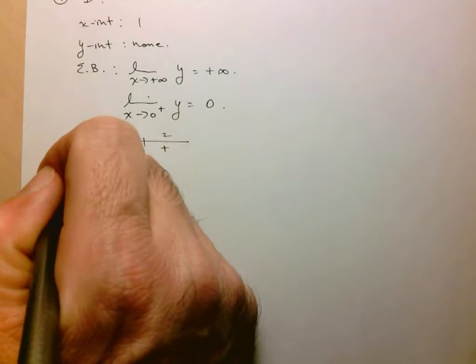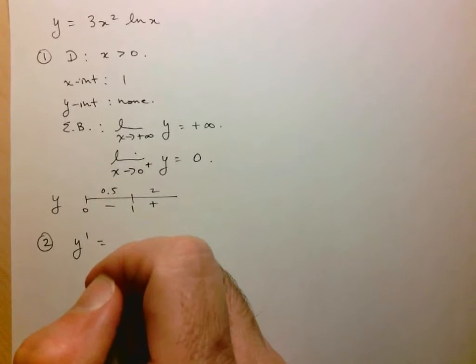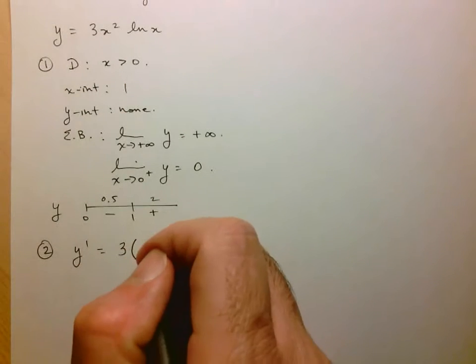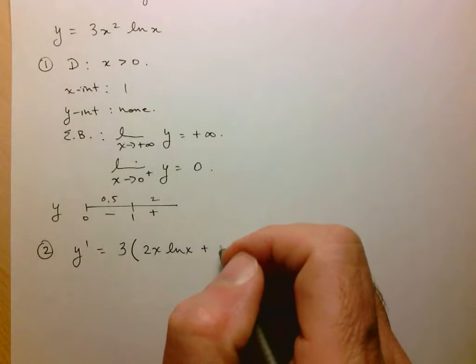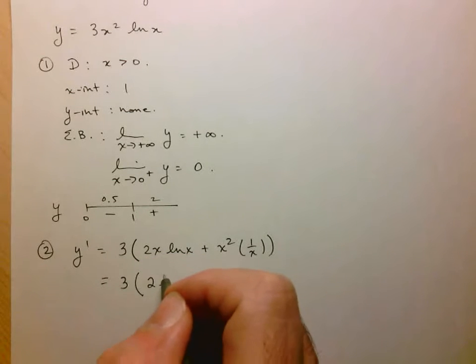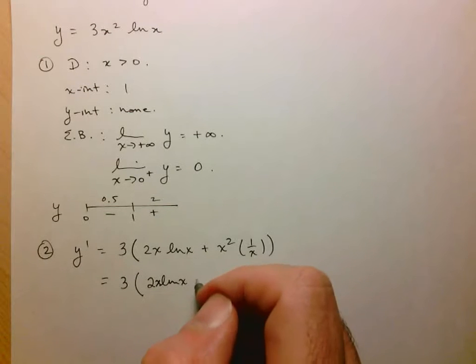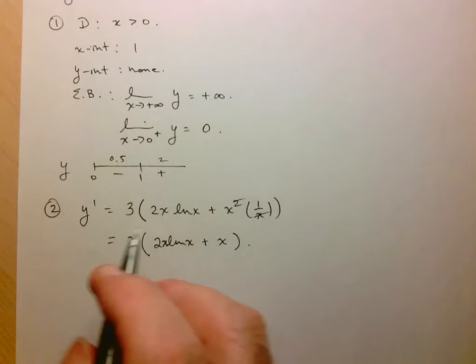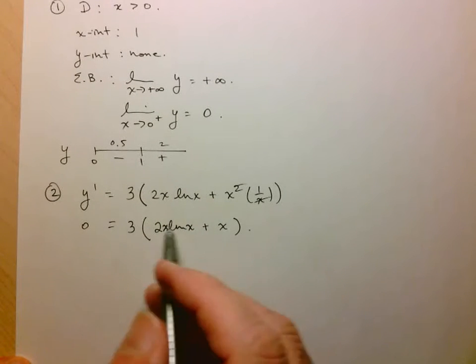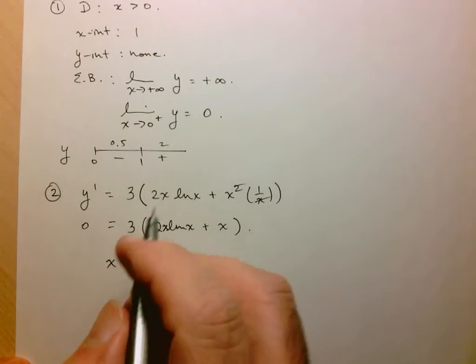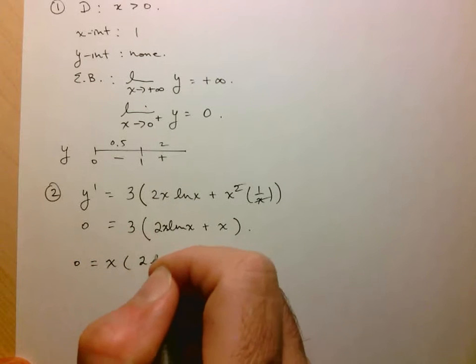Let's move on to the information from the first derivative — that's step 2. y' equals 3 times the derivative of x² lnx. Using the product rule: derivative of x² is 2x times lnx, plus x² times the derivative of lnx which is 1/x. So we get 2x lnx plus x squared over x, and that x cancels, giving us 3 times (2x lnx + x). That's our first derivative.